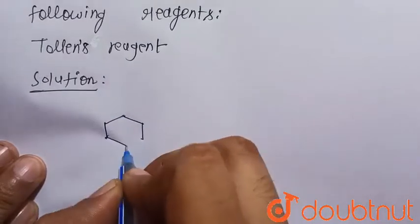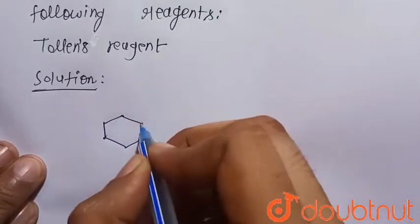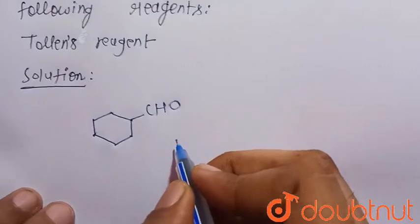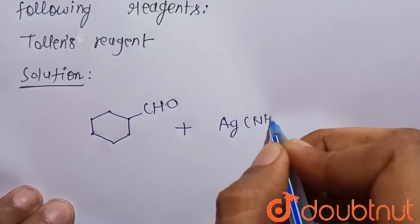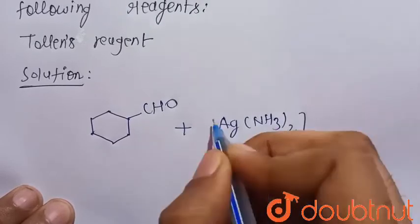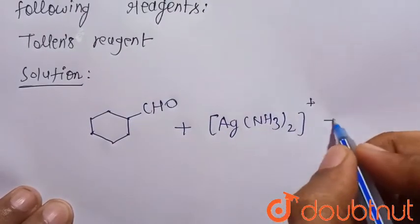When CHO group is attached with the cyclohexane - this is the cyclohexane and this is the CHO - so when it reacts with Tollen's reagent, that is Ag(NH3)2+ in presence of base, that is OH-...